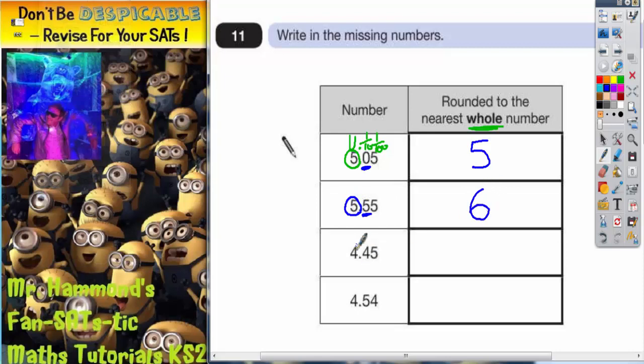Looking at the next one we've got 4.45, so we look at our units, our whole number. We look at the next digit in the tenths column to decide. This is less than 5, so we're going to stay the same.